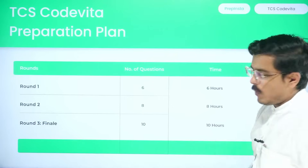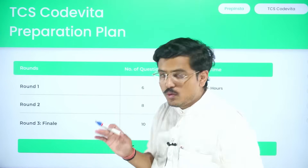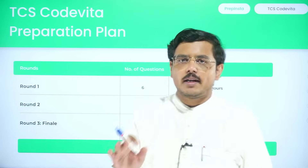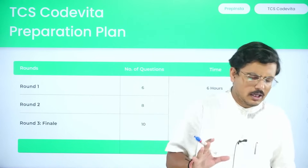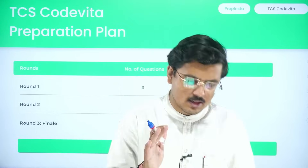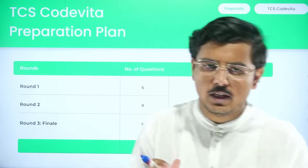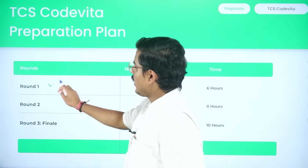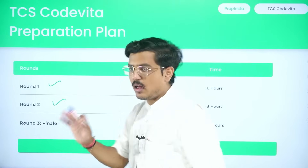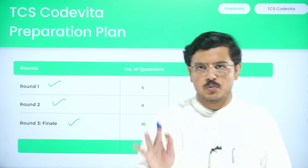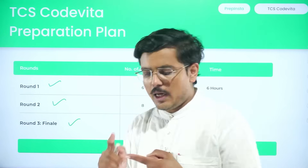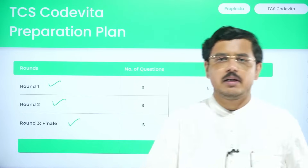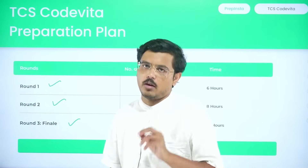As I always do, I give you the skeleton of any exam or contest you are going to appear for. This is the general skeleton of TCS Code Vita: there are three rounds — round one is the preliminary round, round two is the intermediate round, and round three is the grand finale round.